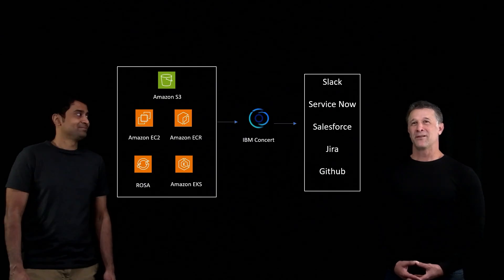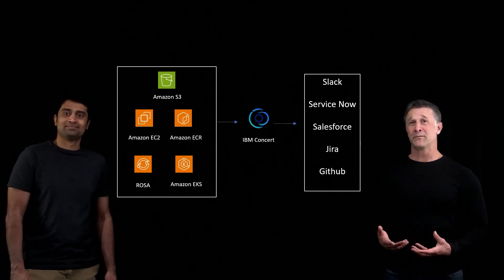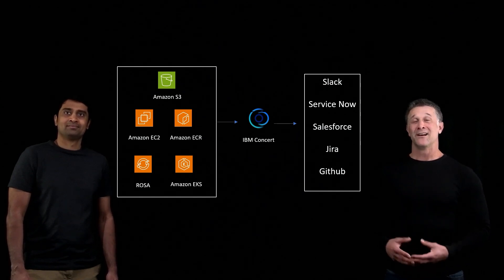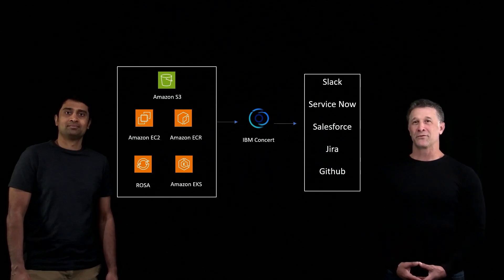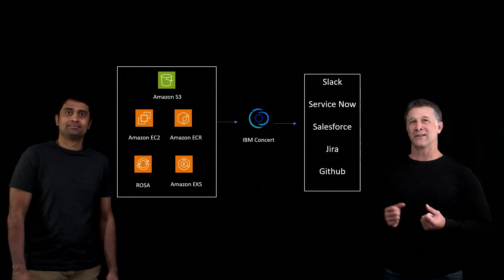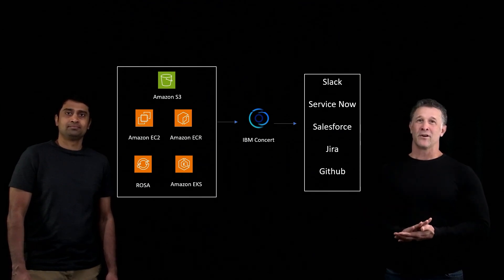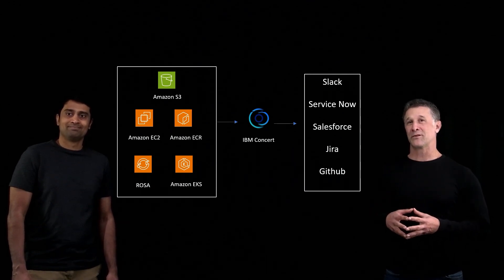Let's do it. IBM Concert is built seamlessly to integrate into your AWS environments, providing full visibility into your application ecosystem. Here's a breakdown of its core components. At our data ingestion layer, Concert ingests data from multiple AWS sources, including Amazon S3, Amazon ECR, Amazon EC2, Amazon EKS, and ROSA. We bring the data into our AI and analytics engine. This layer processes the raw data into actionable insights correlating risks, dependencies, and performance trends.